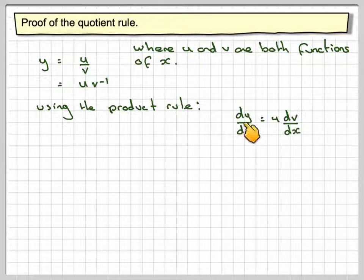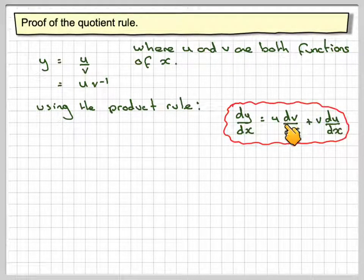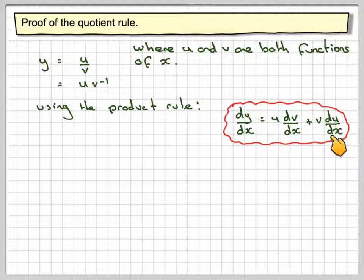which we established in a previous video, we've got dy by dx is equal to u dv by dx plus v du by dx.